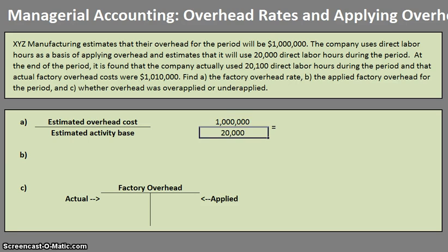So if we divide that $1,000,000 by 20,000 direct labor hours, we find that our predetermined overhead rate is $50. That means we are going to be applying $50 of overhead based on actual direct labor hours, which is where we're getting into Part B.